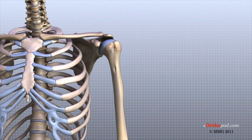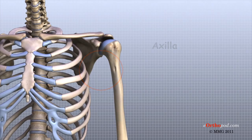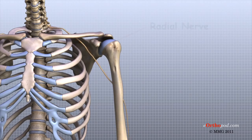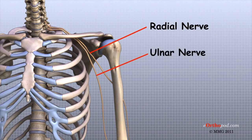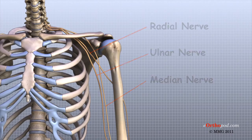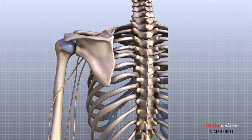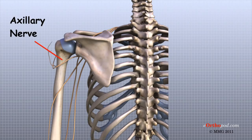The main nerves that travel into the arm run through the axilla under the shoulder. Three main nerves begin together at the shoulder: the radial nerve, the ulnar nerve, and the median nerve. These nerves carry signals from the brain to the muscles that move the arm, and carry signals back to the brain about sensations such as touch, pain, and temperature. There is also an important nerve called the axillary nerve that travels around the back of the shoulder joint to supply sensation to a small area of skin on the outside of the shoulder and motor signals to the deltoid muscle.